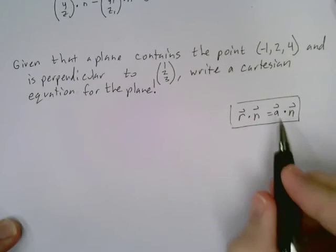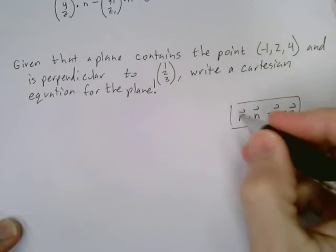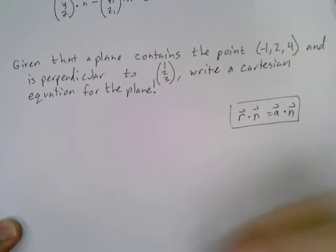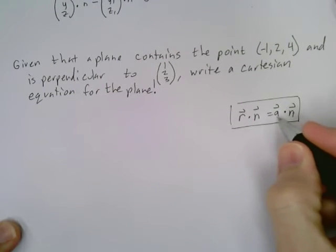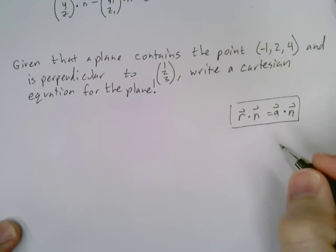Note that this is given to you in the IB booklet. So you can use this. R dot N equals A dot N. Remember that A is a point in the vector, and N is the vector that is perpendicular to the plane.